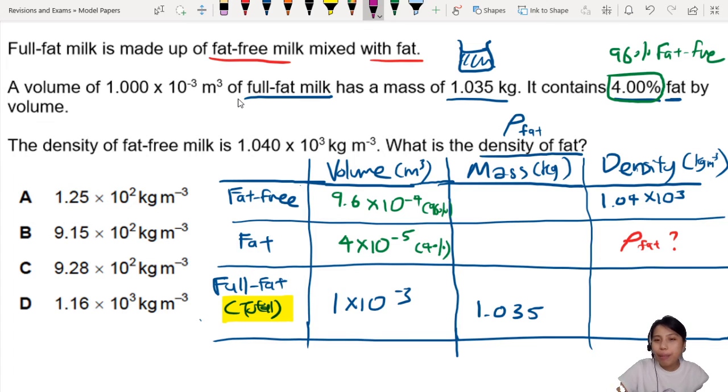I think we can find the mass right here. Because we know that density is mass over volume. So mass will be density times volume. Let's do that. So to find the mass of fat-free milk, we're going to multiply the density, 1.04 times 10 to the 3, times the volume, 9.6 times 10 negative 4.